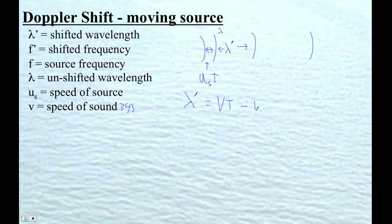Minus the source frequency times the period. And then we can rewrite that because one over the period is the frequency. So we can rewrite this as v minus us divided by the frequency, because remember that frequency is one over period.